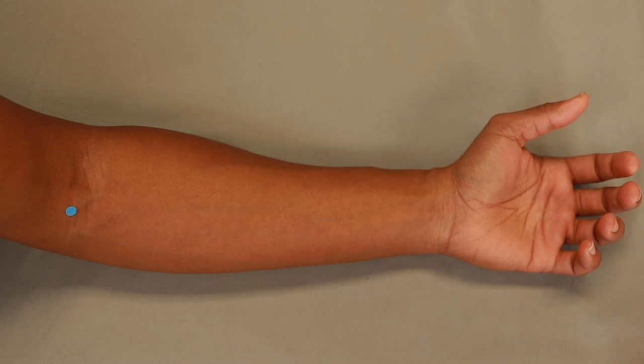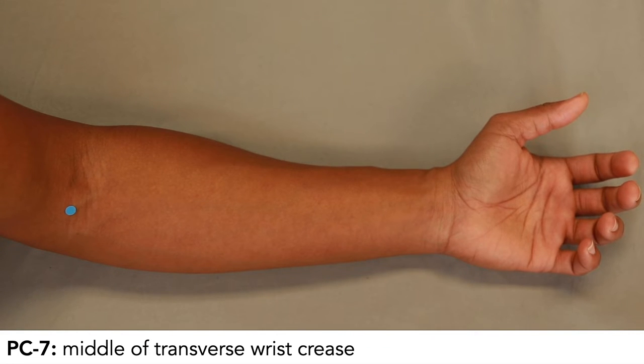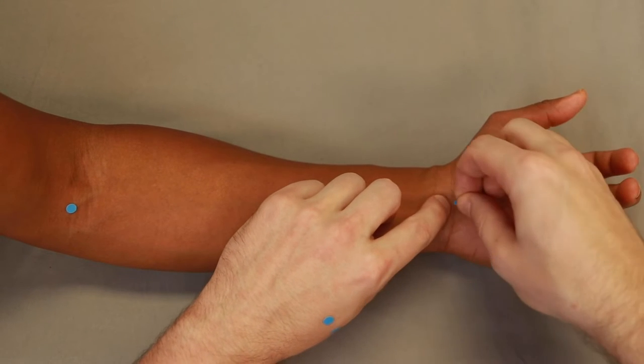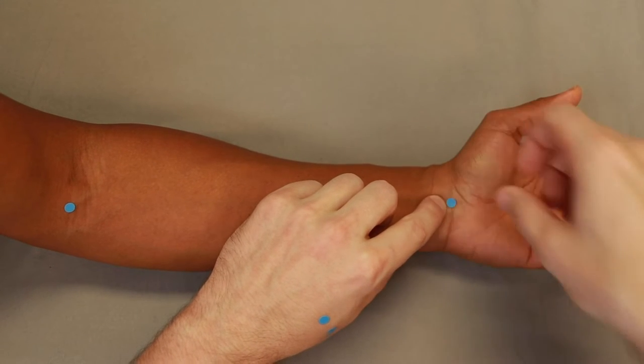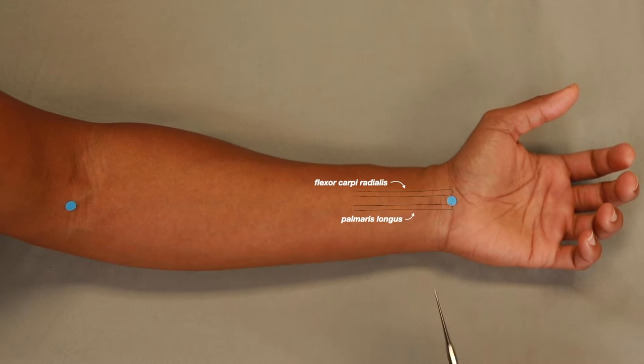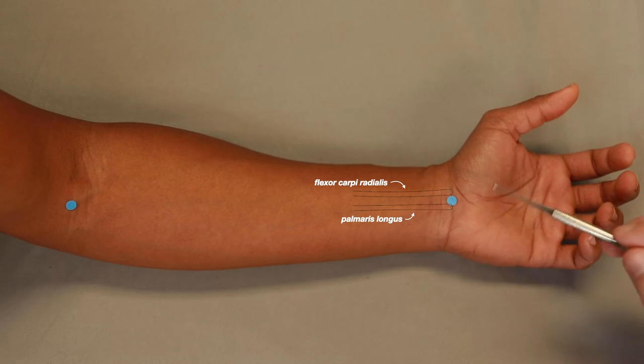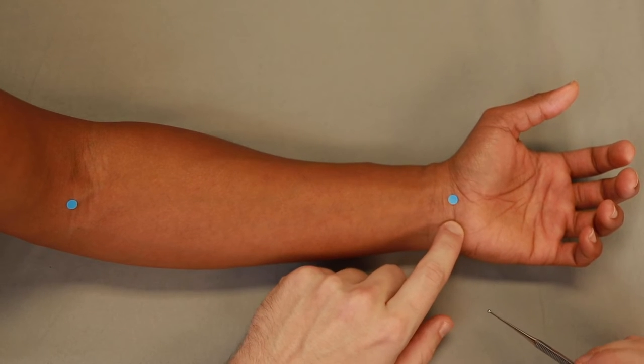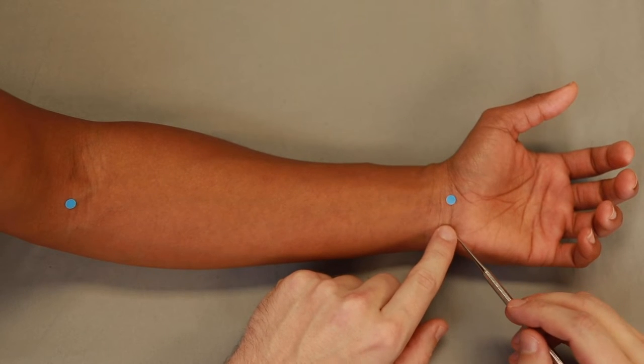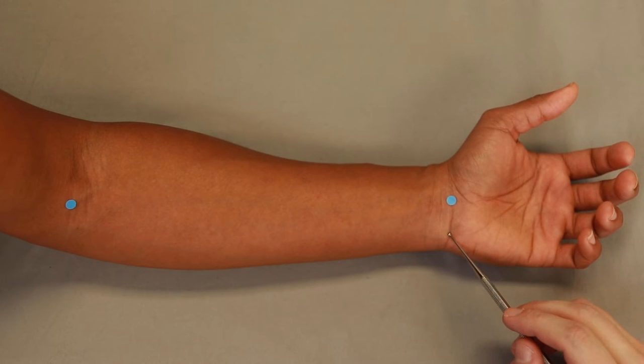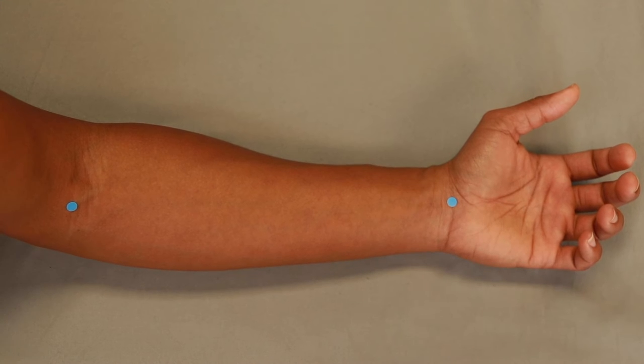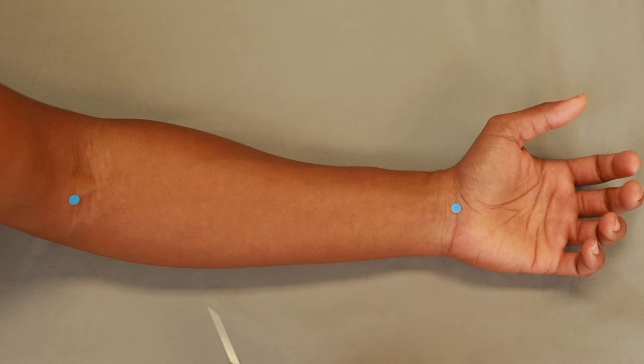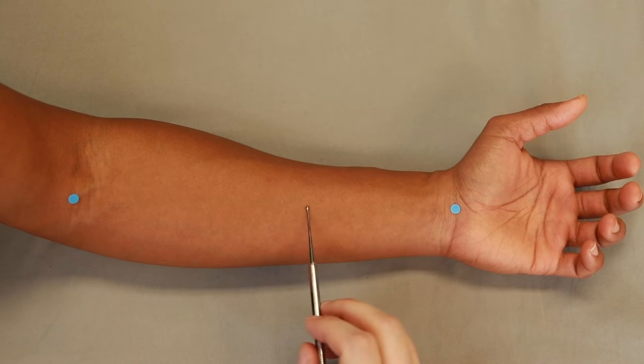After that, we're on the forearm, and we're going to start with pericardium 7. Pericardium 7 is on the transverse wrist crease between the two tendons. So we find our two tendons, and go right between the two. So we're between the two tendons, and then we're on the wrist crease. If you have trouble finding the wrist crease, you can come over here and find Heart 7 on the proximal border of the pisiform bone. And then pericardium 7 is going to be in line with that. So this gives us our line from pericardium 3 to pericardium 7, but really we're just going to be between these two tendons the whole way.